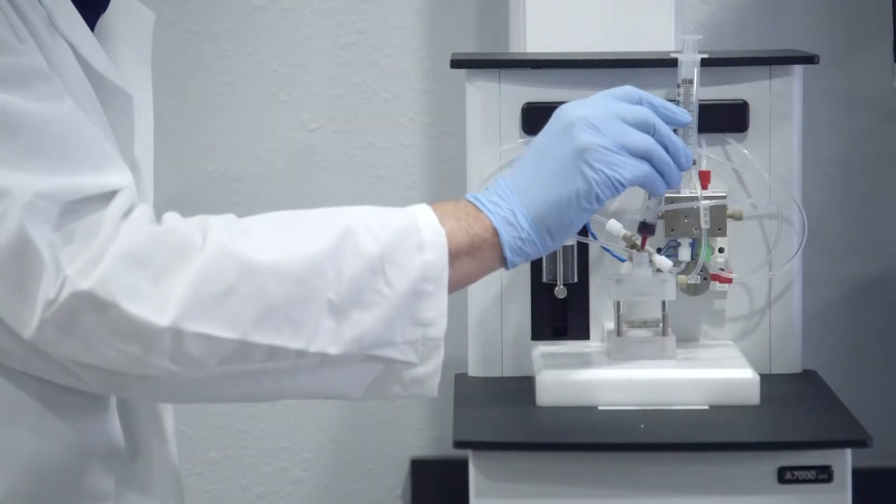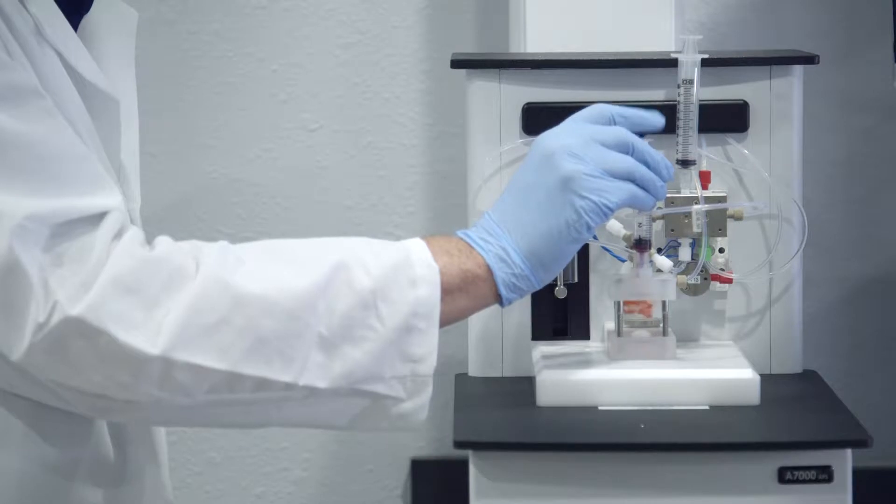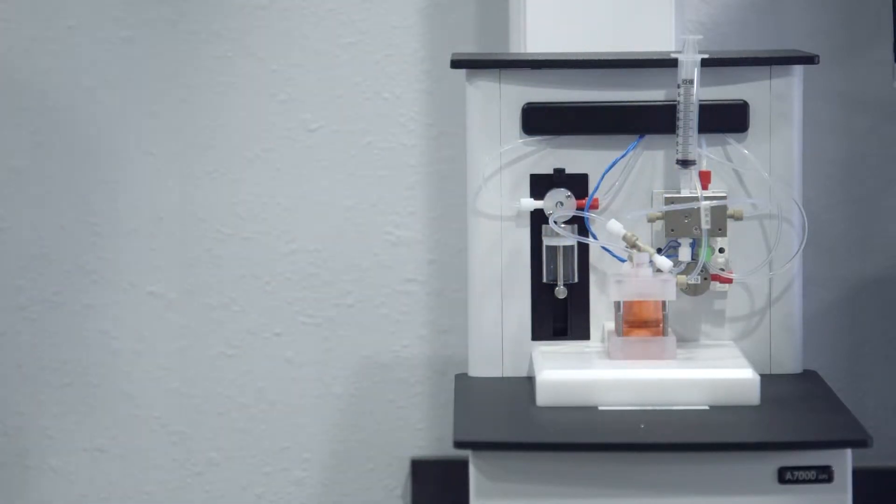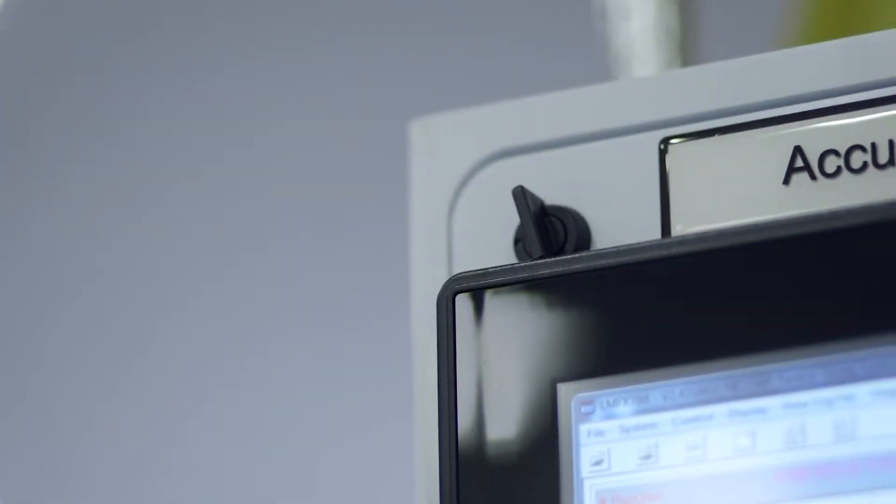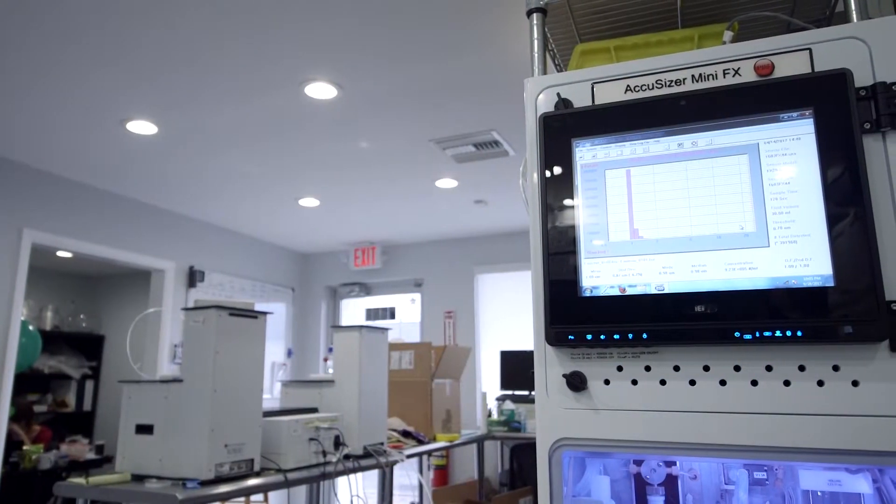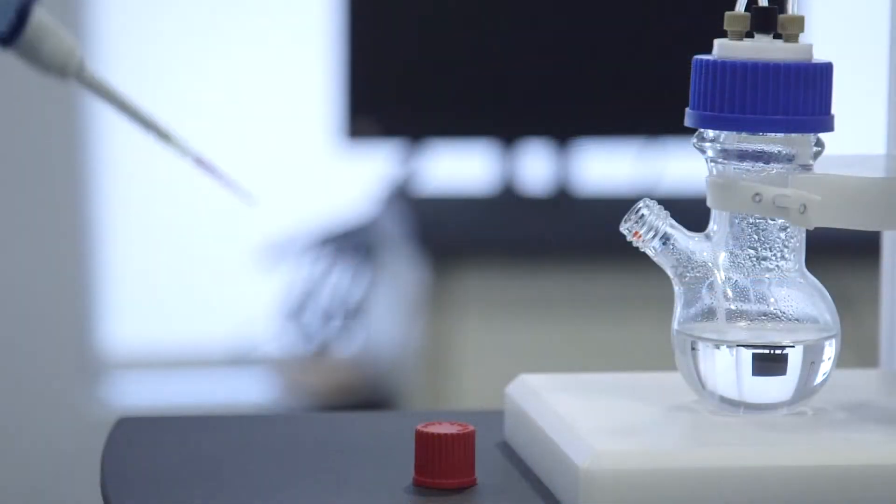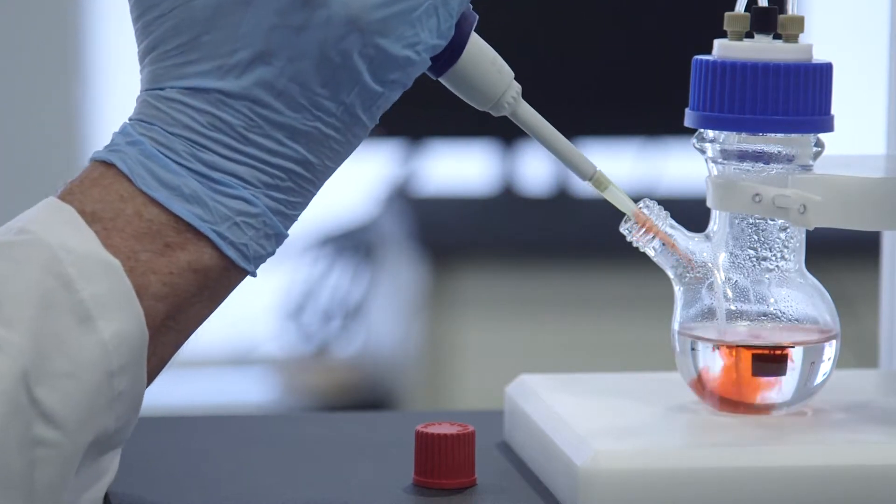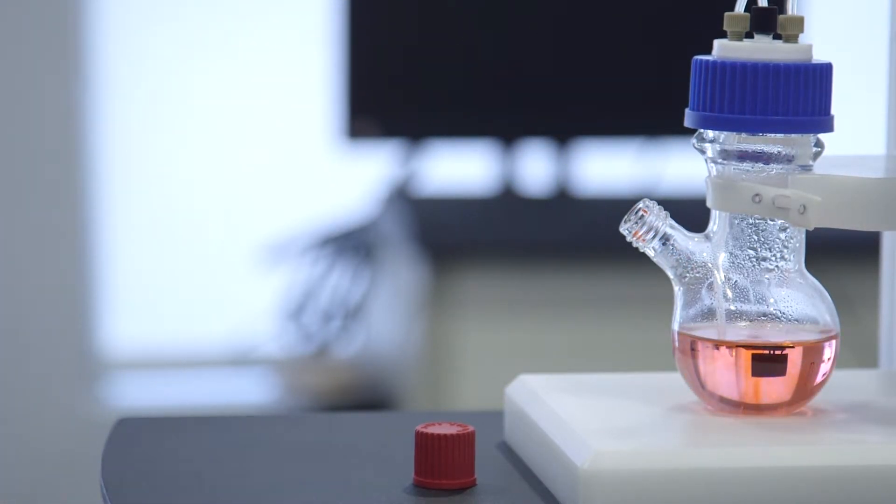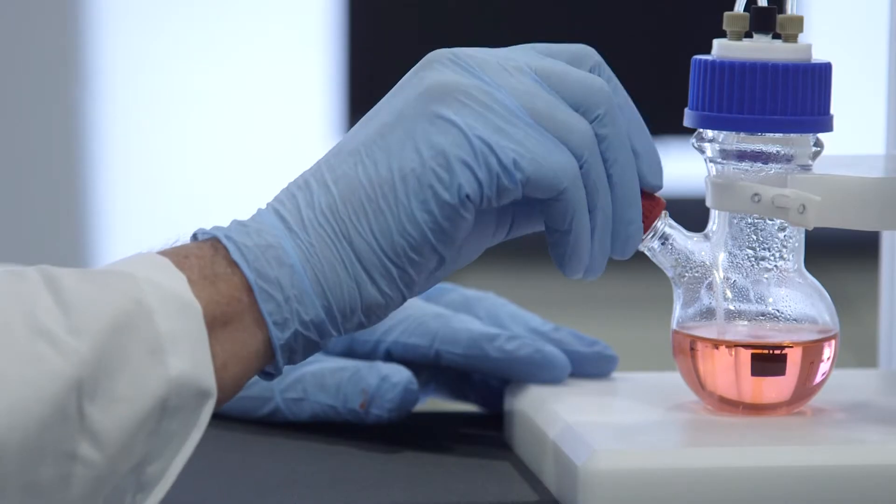The AccuSizer is used to count contamination particles in liquids ranging from parenteral drugs to water and hydraulic fluids. The AccuSizer is the industry standard for detecting large particle counts in CMP slurries and is used as a particle size analyzer in the pharmaceutical, ink, and emulsion industries.